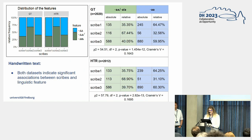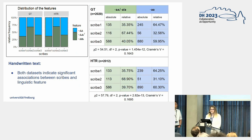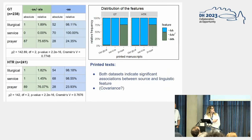Moving on to descriptive and inferential statistics, we focused on a binary linguistic feature that can be distinguished as pre-jotified and non-jotified forms. The distribution between ground truth and HTR is remarkably similar. Both datasets indicate a significant relationship between the linguistic feature and the scribes, though the statistical correlation overall is weak. Differences in absolute feature counts suggest we are dealing with false positive and false negative feature hits. For the printed texts, we also observed a significant relationship between the linguistic feature and the three books.